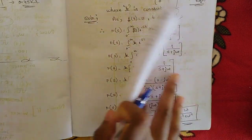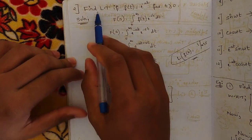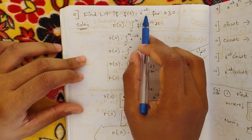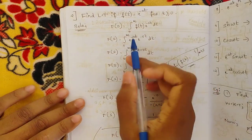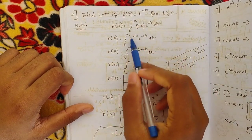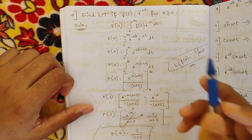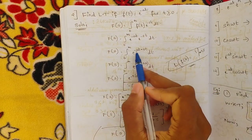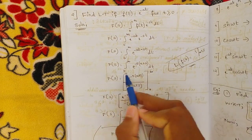Similarly, here is one more example: find the Laplace transform of f(t) = e^(−at) for t ≥ 0. Again, use the formula F(s) = integral from 0 to infinity of f(t) e^(−st) dt. Substitute f(t) = e^(−at): we get the integral of e^(−at) · e^(−st) dt. Since they have the same base, add the exponents: e^(−at − st). Factoring out −t, we get the integral of e^(−t(a+s)) dt.